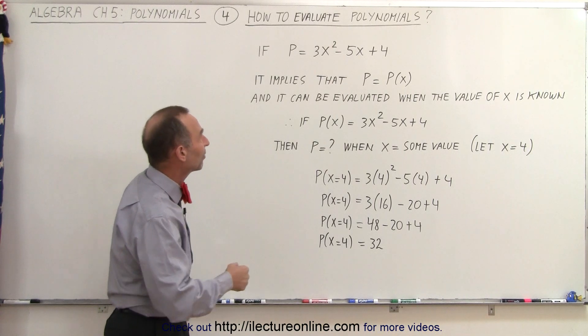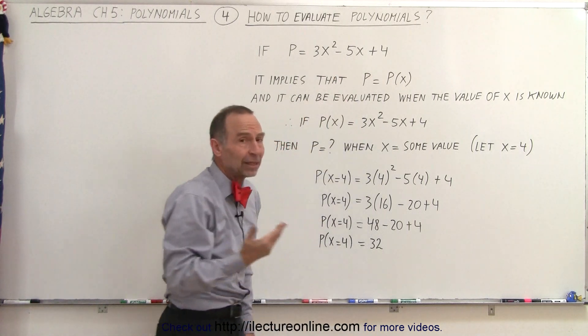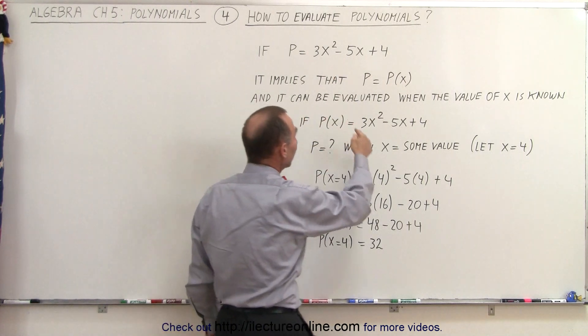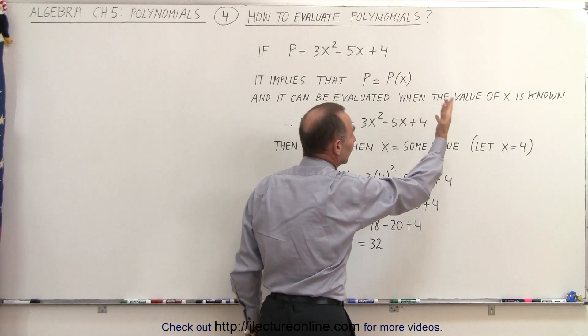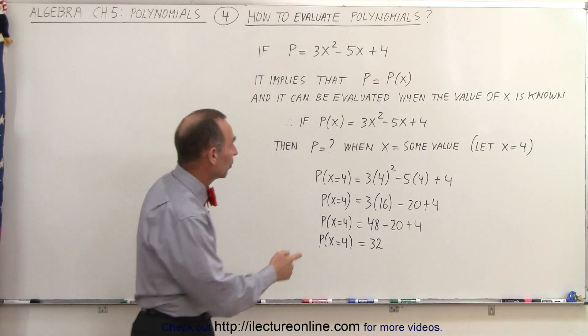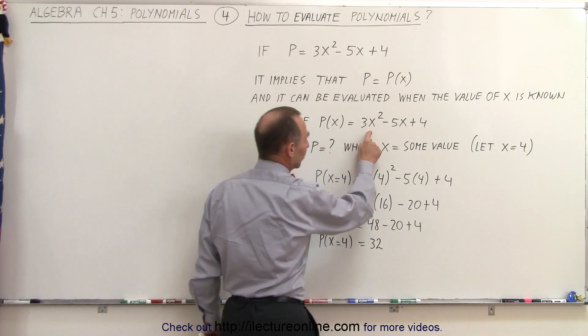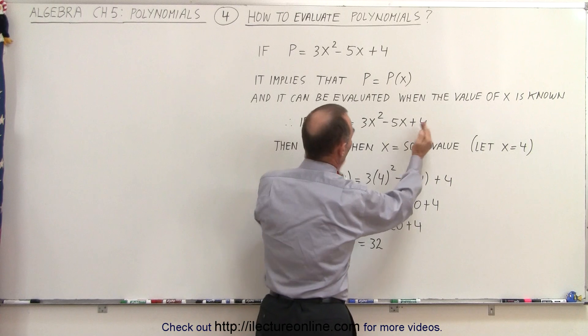which implies that the polynomial depends on some variable x. And we can evaluate that polynomial if the value of that variable x is given or known. So, we can then write the polynomial as follows. The polynomial depends on the variable x, and it is equal to 3x squared minus 5x plus 4.